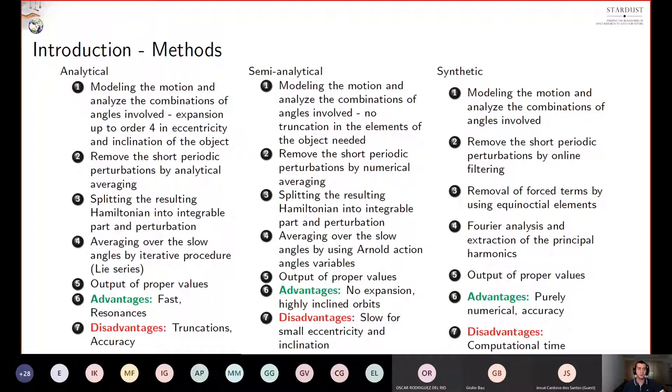This step is done using the analytic average for analytic theory, the numerical average for semi-analytic theory, and online filtering for the synthetic theory. The third step consists in a separation of motion, integrable and perturbed part for the first two theories, and then an elimination of forced terms for the synthetic theory. Then an averaging over slow angles is used for the analytic and semi-analytic theory by using canonical transformation, while in the case of synthetic theory, a Fourier analysis and the extraction of principal harmonics are made. In the last steps, the obtained results are used for definition of proper elements.